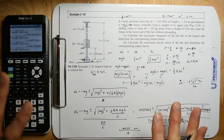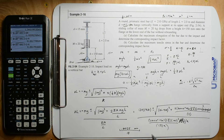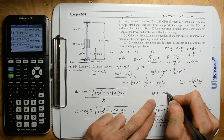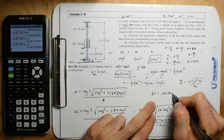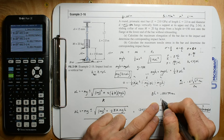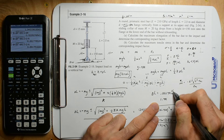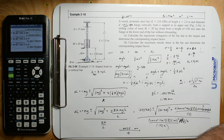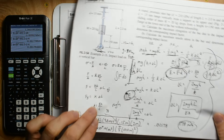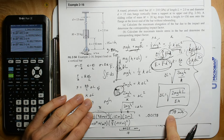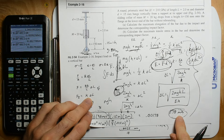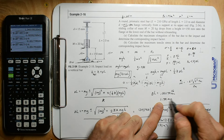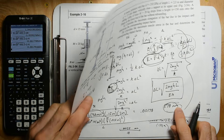We have a change in length of 0.00179 meters, which is 1.79 millimeters. And from part 2 we get 1.78 millimeters. This does stretch it one more millimeter — that's the take home point. This thing is going to elongate an extra millimeter and have a higher stress.